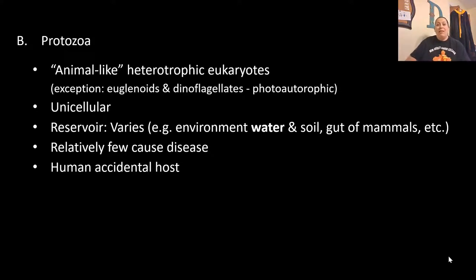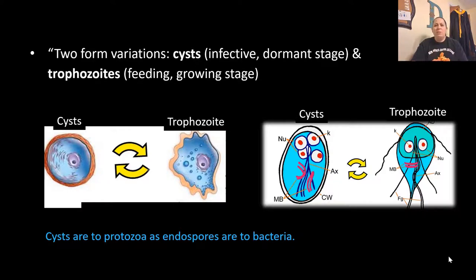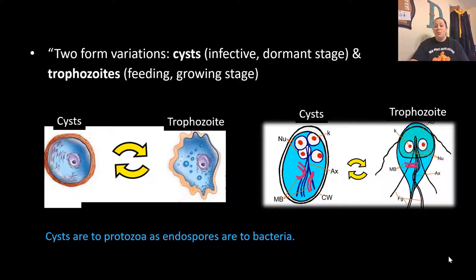Relatively few protozoa actually cause disease, and if they do, normally the human is an accidental host — they didn't really want to get inside the human. There are two form variations with protozoa: the cyst type, which is the infective or dormant stage, and the trophozoite stage, which is the feeding and growing stage. There is a constant back and forth between these two stages. Cysts are to protozoa as endospores are to bacteria — the cyst structure can protect the protozoa from the environment in the same way.